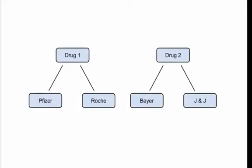For example, consider a study that wanted to compare two different kinds of drugs, also looking at the manufacturer of the drugs. We have two different drugs and each drug is made by two different manufacturers. Drug one could be made by Pfizer and Roche; drug two may be manufactured by Bayer and Johnson & Johnson. So we really can't construct all of the treatment combinations — drug one manufactured by Bayer doesn't exist. Therefore, the manufacturers are nested within the drugs.